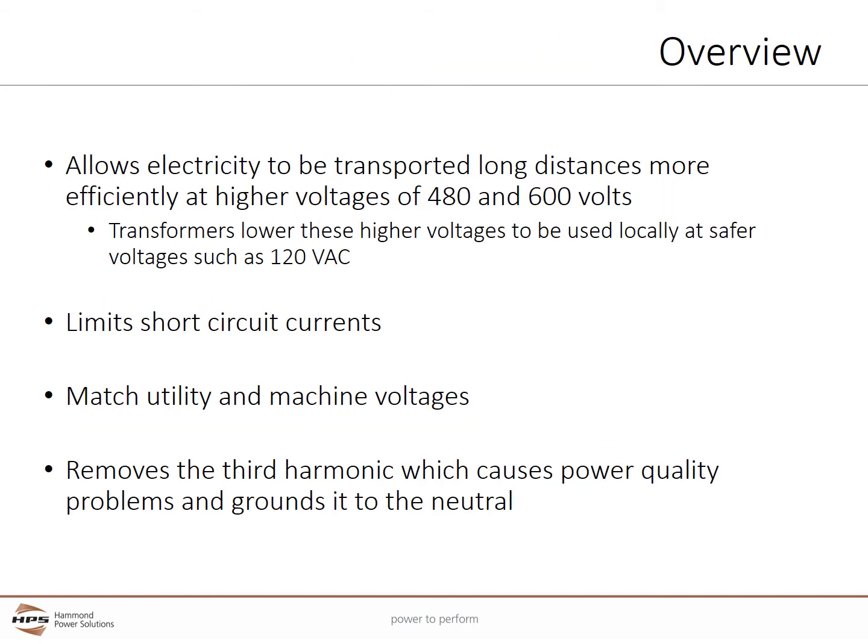General-purpose transformers have a number of applications. They allow electricity to be transported long distances more efficiently at higher voltages of 480 and 600 volts. The transformers then lower these higher voltages to be used locally at safer voltages such as 120 volts. If needed, transformers can also be manufactured to raise voltages to 480 or 600 volts if lower voltages are present.